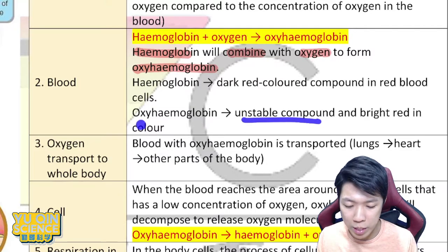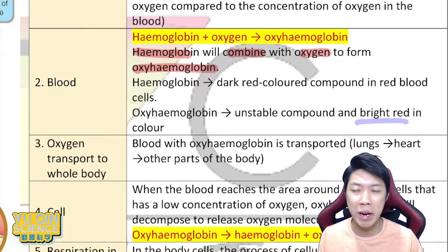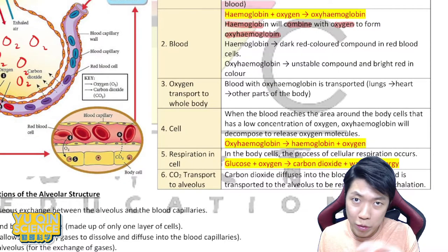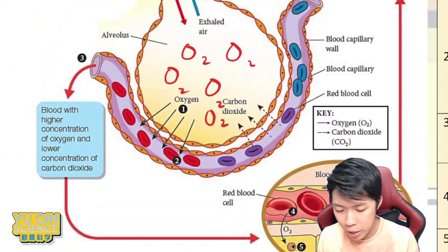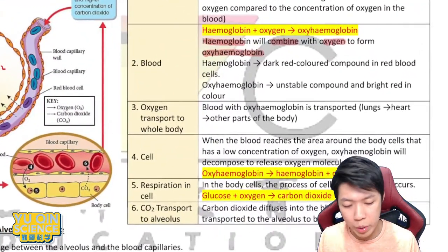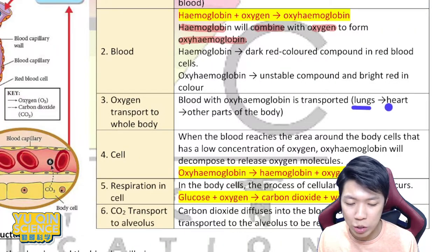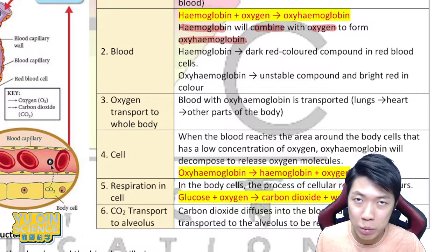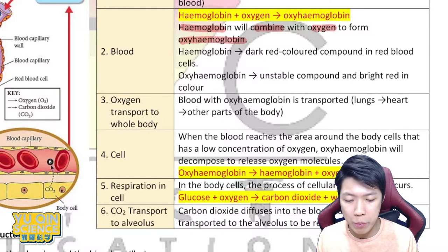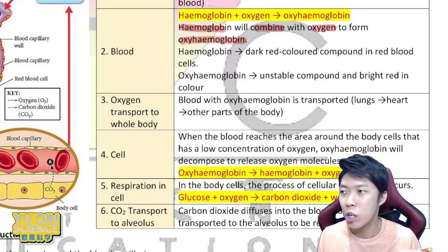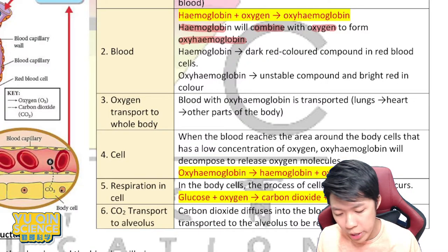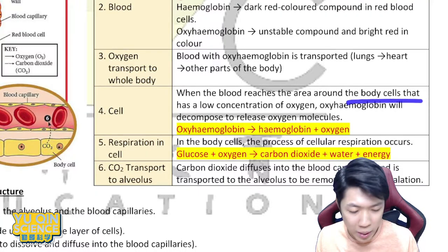The characteristics of oxy-hemoglobin: unstable and bright red. Step three: the blood is now full of oxygen, so oxygenated blood will flow to the body cells to distribute oxygen. Before that, it usually travels from the lungs to the heart — as you'll learn in chapter three, the heart pumps blood to other parts of the body. This oxygenated blood carries oxy-hemoglobin.